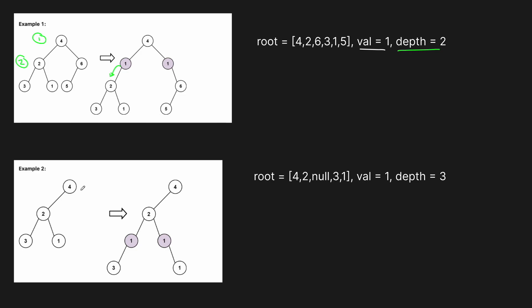In the second example, we have the tree four, two, three, one and we want to insert at depth three. So this is level one, two, three — we put it on that level. The node two gets two new child nodes both with value one. Then three, which was two's left subtree, becomes the left subtree of the new left one, and one, which was two's right subtree, becomes the right subtree of the new right one.